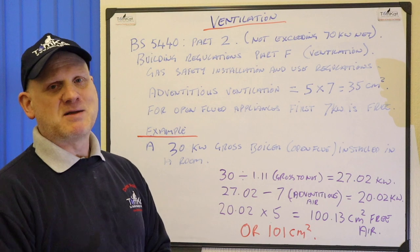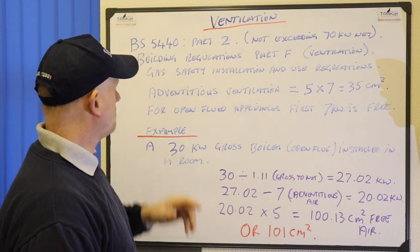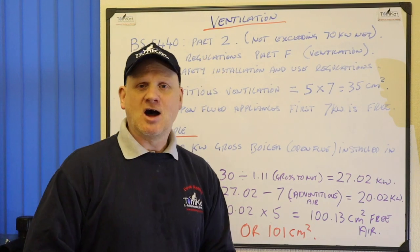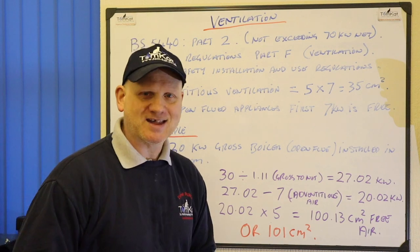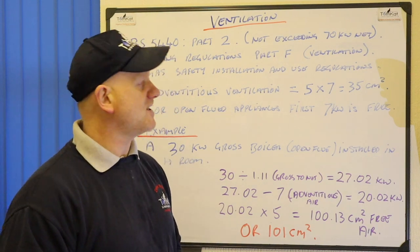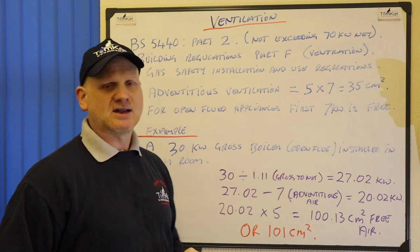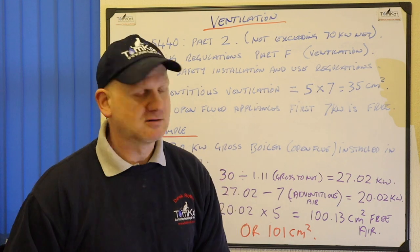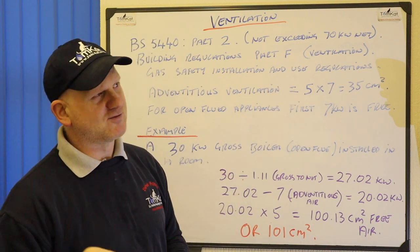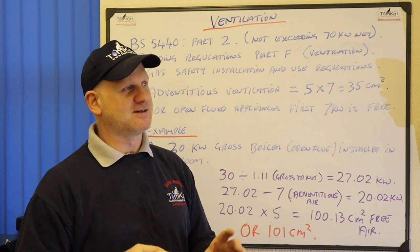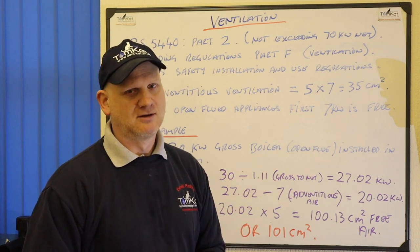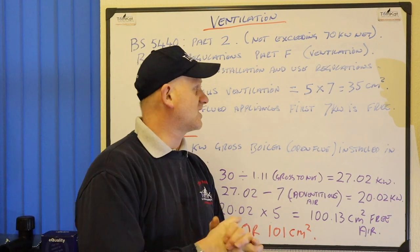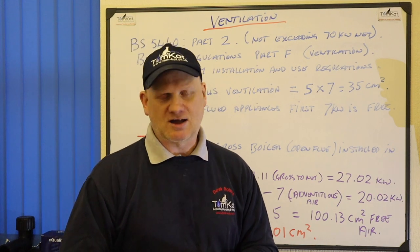Now let's talk about the basics for ventilation first. BS5440 Part 2 is all about ventilation, and that's for appliances not exceeding 70 kilowatts — that's important. The building regulations we're going to be referring to is Building Regulation Part F for ventilation, and the way I've always told people to remember that is 'F for ventilation' — it works, trust me. We can also look at the Gas Safety Installation and Use Regulations.